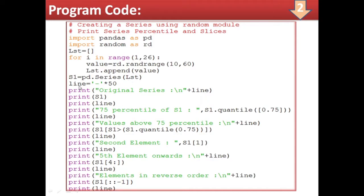Here I have drawn a line in the output by repeating dashes 50 times to separate query outputs. Wherever required, I have drawn the line just to separate the query outputs. The first query is to print the original series — print the original series heading, then a new line, a separator line, and then print s1. Another separator line is drawn. Thereafter, for the 75th percentile of s1, we use the quantile function.